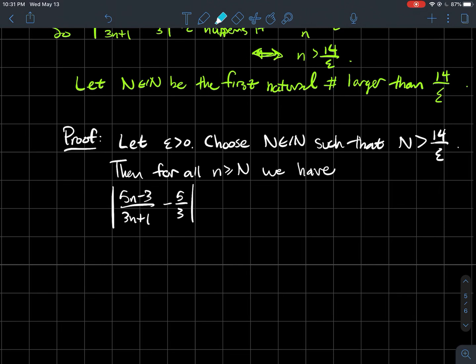The absolute value of the nth term minus 5/3—I did the simplification earlier—equals |-14/(3(3n+1))| ≤ 14/n ≤ 14/N, since n > N means the fraction with the larger denominator is smaller. Therefore, this fraction with the larger denominator is less than or equal to this fraction with the smaller denominator.